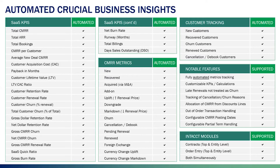We're also tracking customer metrics — bucketizing customers that are new, customers that are recovered (i.e., they churned and returned), churn customers, renewed customers, as well as cancellation and debook customers. One of the most important features is the automated metrics tracking. All of these metrics are entirely automated by the system as transactions flow through — it's making decisions, analyzing, diagnosing, and bucketizing all CMRR in real time, making those metrics available for consumption.